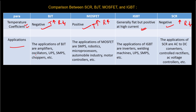Now let's look at the applications. BJT is used in oscillators, UPS, SMPS, and choppers. MOSFET is used in many places such as ICs in modern electronics using MOS technology, robotics, microprocessors, microcontrollers, automobile industries, and motors. IGBT is used in inverters, welding, UPS, and SMPS. SCR is used as a controlled rectifier — for AC to DC conversion and controlled rectification.